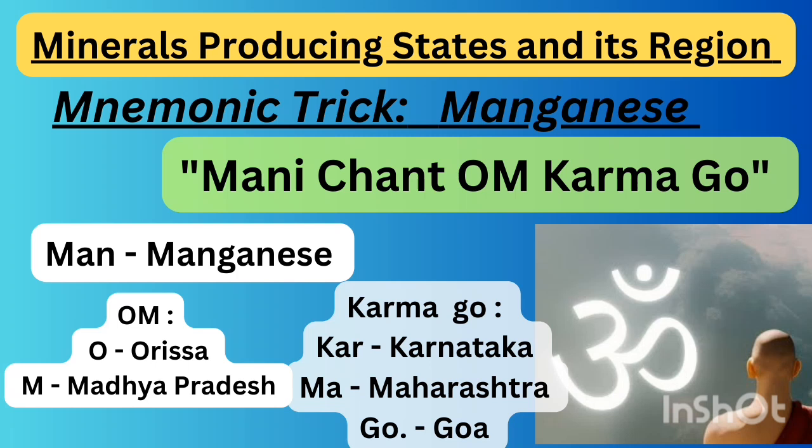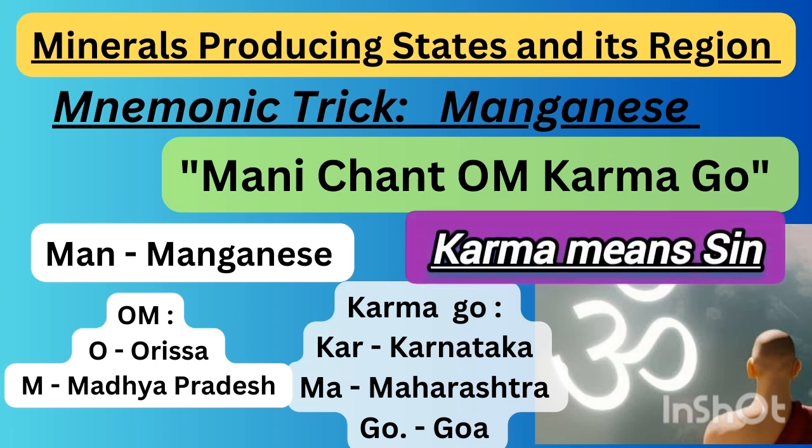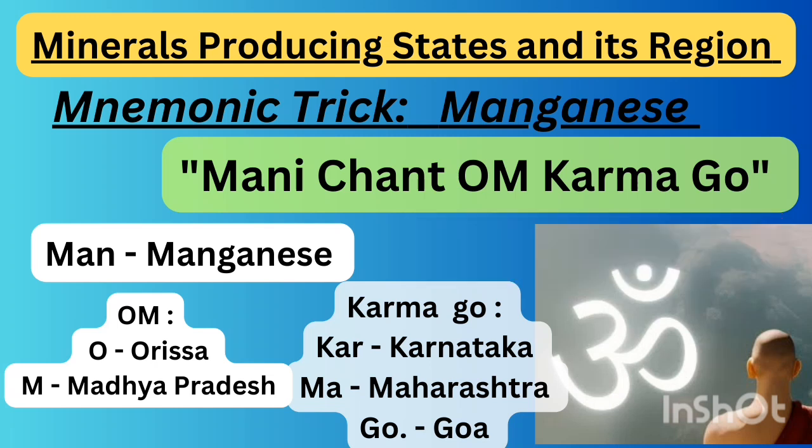The first shortcut trick is for manganese. The shortcut is: 'Money chant Om mantra, then karma will go away.' In that, 'Om' — O refers to Orissa, M refers to Madhya Pradesh. 'Karma' — kar represents Karnataka, ma represents Maharashtra. 'Go' represents Goa. So these are the regions where they produce manganese.